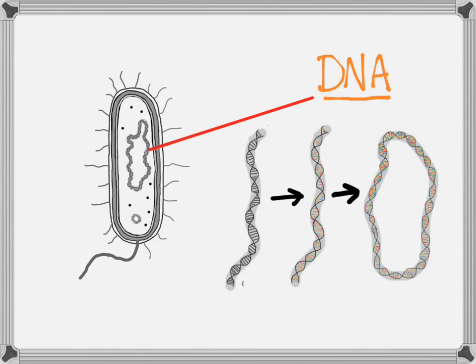Because remember, DNA is the stuff that has all the instructions for building that cell — for building the cell membrane and the cell wall, for building the capsule, for making proteins, everything. It's all contained in that beautiful little chemical bracelet.